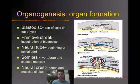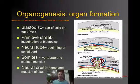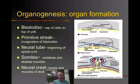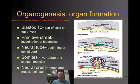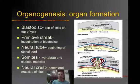Next, we talk about organogenesis, which is the formation of organs. When we talk about gastrulation, we're talking about mass movement of cells. Organogenesis is when you have more concentrated, finite movement of cells to develop structures such as the neural tube. The neural tube is the beginning of our spinal column. Somites develop, which are vertebrae or skeletal muscles starting to develop along that neural tube. You have a neural crest where bones and muscles of the skull start to develop. All of these come from the layers created by gastrulation: the endoderm, the mesoderm, and the ectoderm.